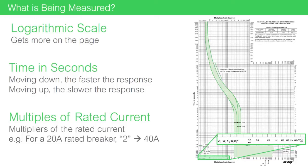For instance, if this time-current curve was reporting the characteristics of a 20-amp circuit breaker, 2 would not mean 2 amps, but 2 times the rating of the circuit breaker, in this case, 40 amps.